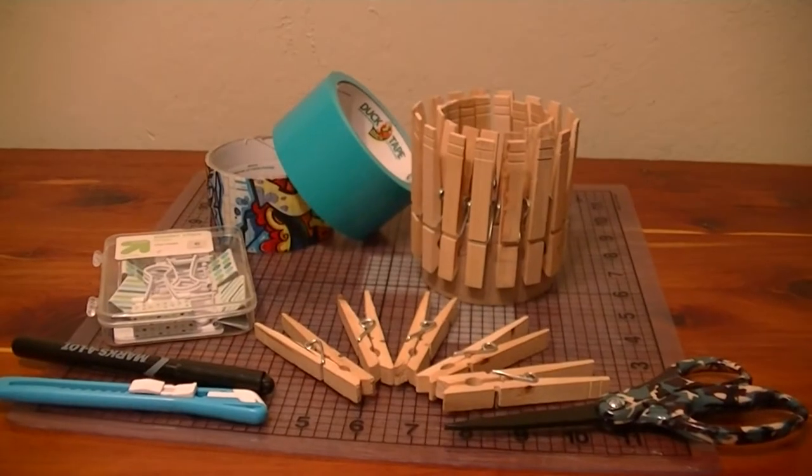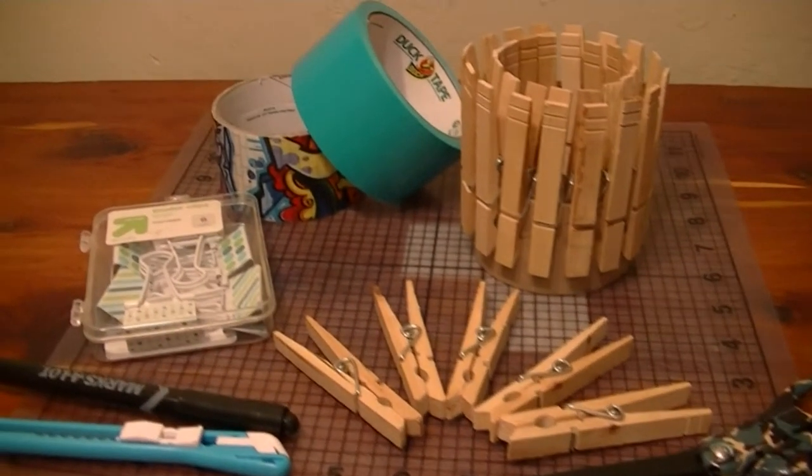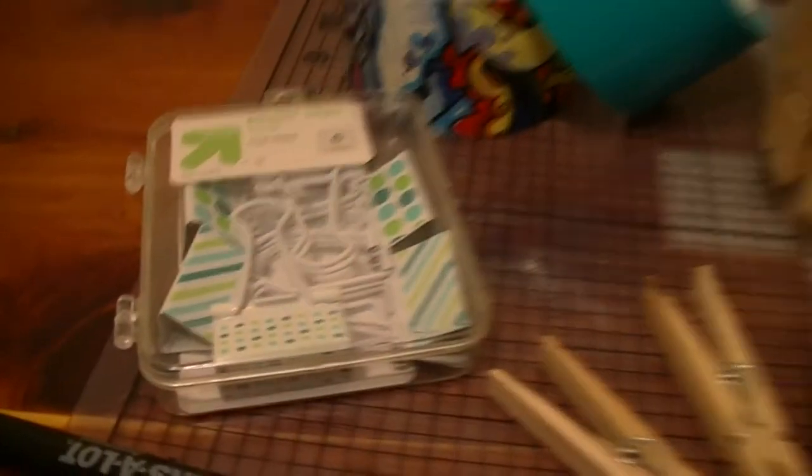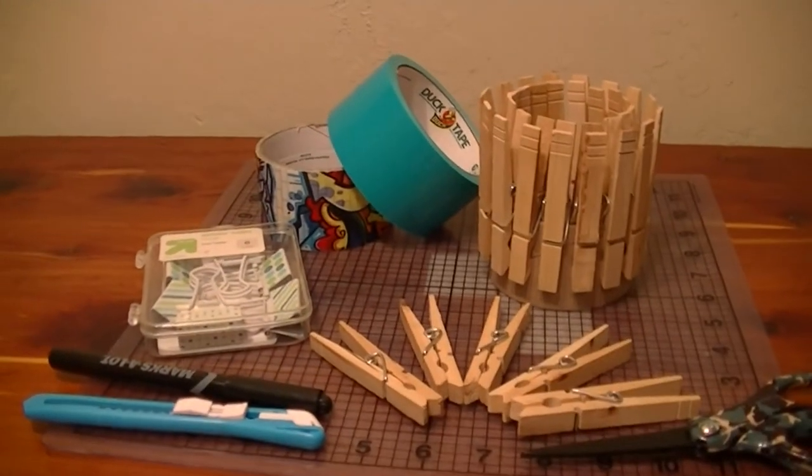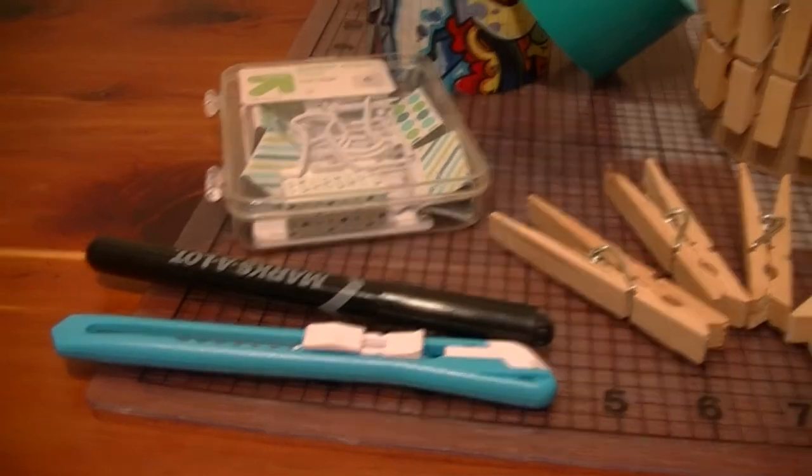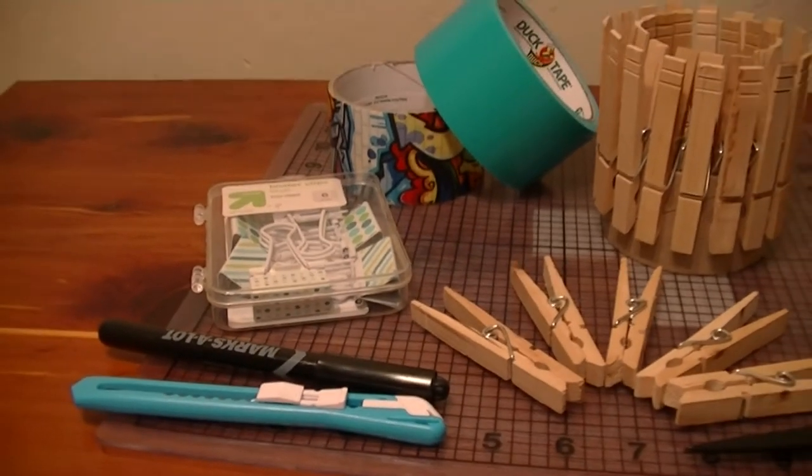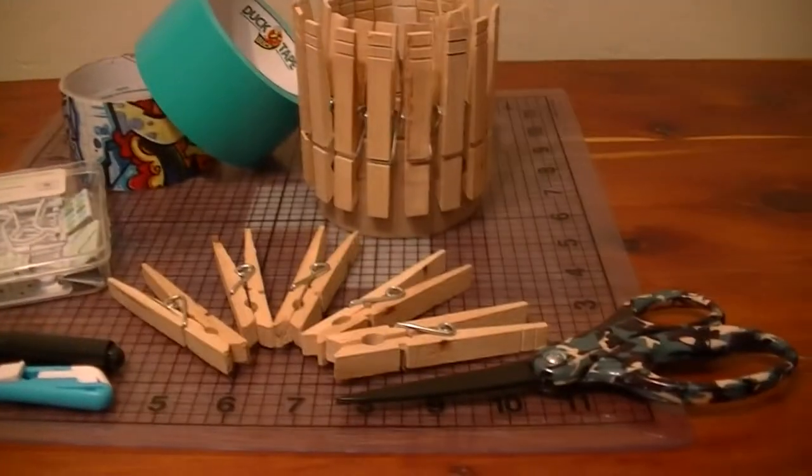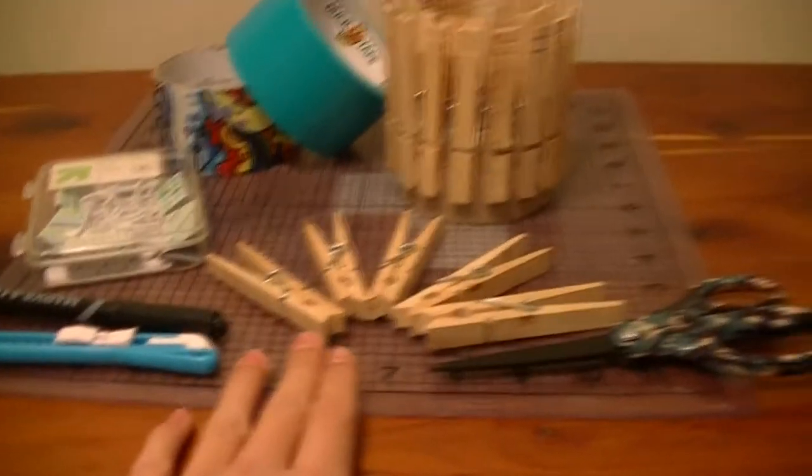So depending on if you guys are gonna want to use clothespins or these kind of clips, pick one of those. So you're gonna need those, a Sharpie's optional, a permanent marker, a box cutter, scissors, and some duct tape, and a cutting surface.